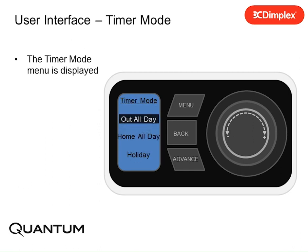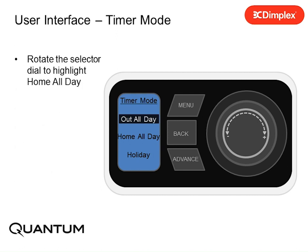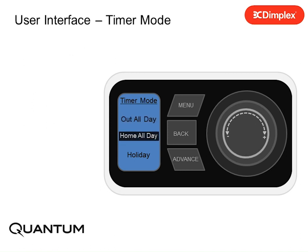The timer mode menu is displayed: out all day, home all day, or holiday mode. The selected timer mode will be highlighted by default. Rotate the selector dial to highlight home all day, then press the selector dial.